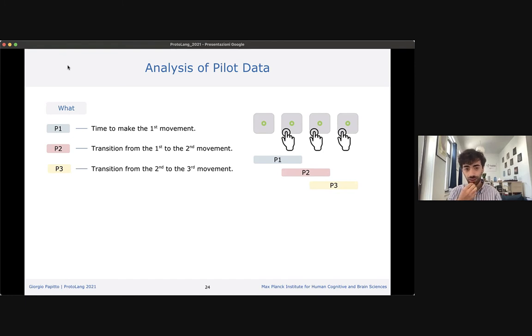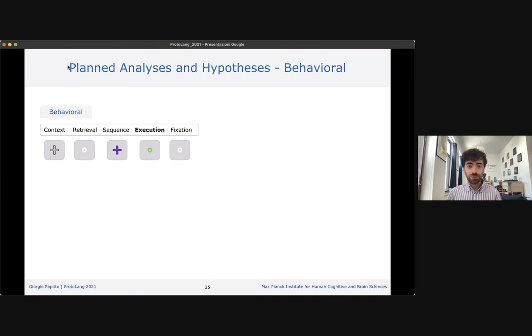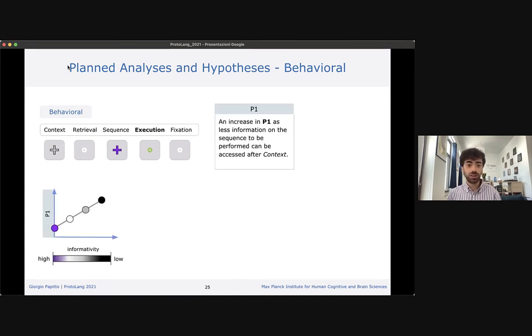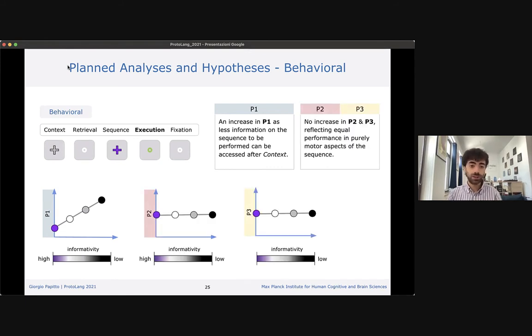For this behavioral pilot study, we analyzed three movements separately: the time participants needed to make the first, second, and third presses of the finger tapping sequence. To analyze this data, we used both a frequentist and a Bayesian approach. Behaviorally, we hypothesized that the type of information processed at the beginning of the trial, at context cue, will affect later execution of the sequence. In particular, we predicted that only the first press would be affected, since this reflects time participants need to access the tapping sequence. We expected that the less informative the context cue, the more time was needed to start the finger tapping movement. We expected no increases in P2 and P3, reflecting equal performance in purely motor aspects of the sequence.